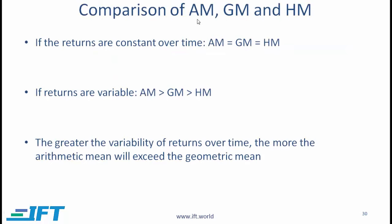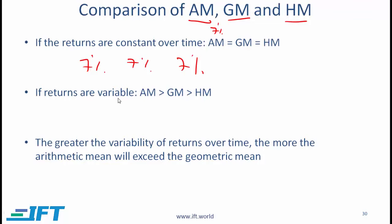Let us now look at a comparison of the arithmetic mean, geometric mean, and harmonic mean. If returns are constant over time, the three will be the same. For example, if all three years have a 7% return, the arithmetic mean is 7%, the geometric mean is 1.07 × 1.07 × 1.07 raised to 1/3 minus 1, which also gives 7%, and the harmonic mean also gives 7%.